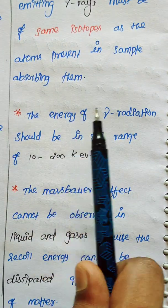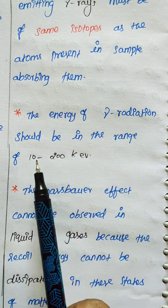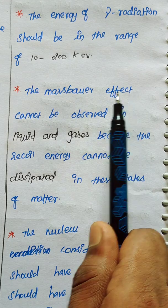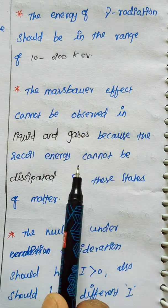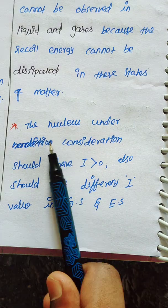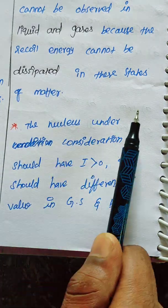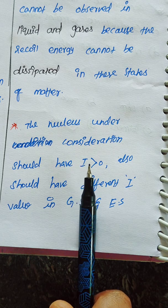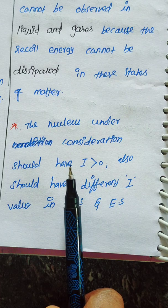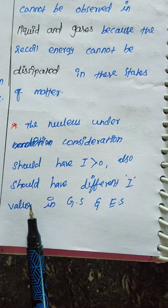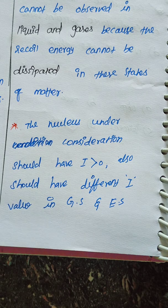The second condition is that the energy of gamma radiations should be in the range of 10 to 200 kilo electron volts. Next, the Mössbauer effect cannot be observed in liquids and gases because the recoil energy cannot be dissipated in these states of matter. The next condition — this is very important — the nucleus under consideration should have an I value greater than zero, meaning it must have a nuclear spin, and it should have different I values in the ground state and excited state.